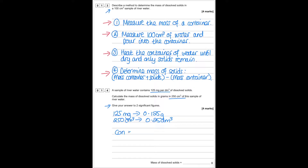Because concentration is mass divided by volume, to work out the mass we rearrange this to give concentration times volume. So the mass is 0.125 g/dm³ times 0.25 dm³, which gives 0.03125. To two significant figures our answer is 0.031 grams.